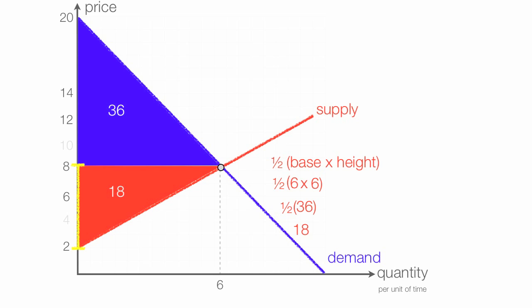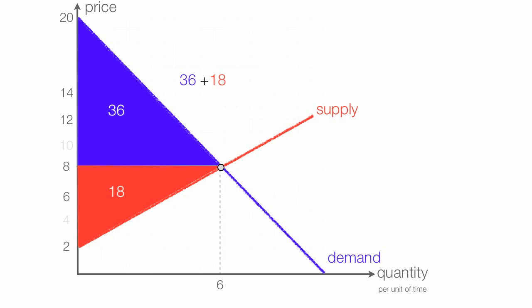36 plus 18 is equal to 54, and this is total benefit.